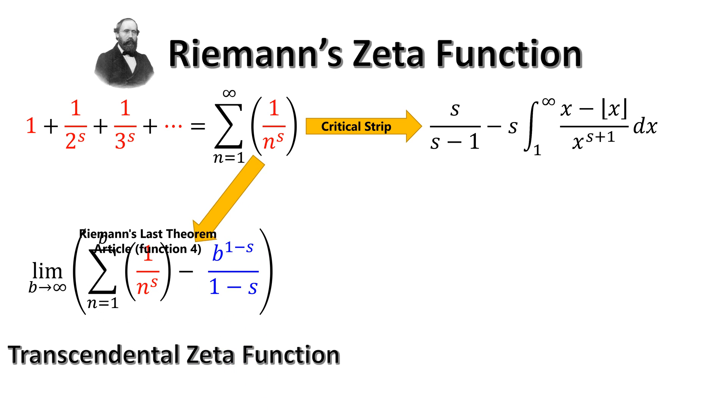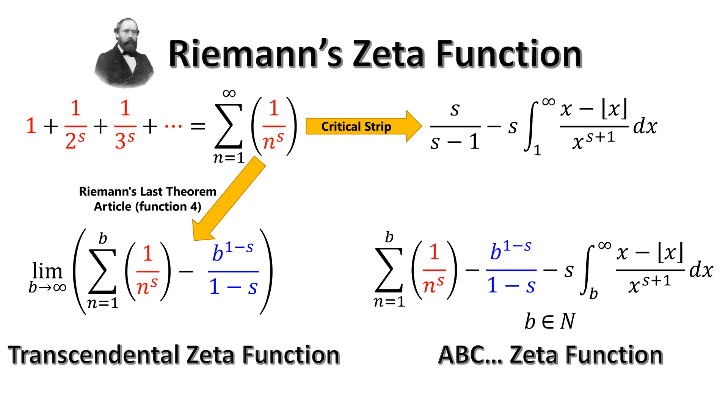You can see the proof for this zeta function in the Riemann's Last Theorem article. This is a similar zeta function that we can obtain from Riemann's zeta function, and you can see the proof for this function in that article as well.